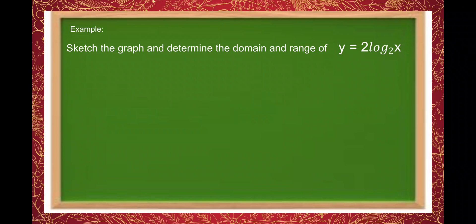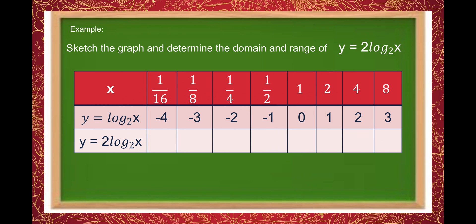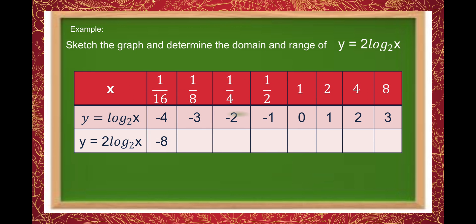For example, sketch the graph and determine the domain and range of y is equal to 2 times log of x to the base of 2. From the table of y is equal to log of x to the base of 2, since we are making a table for y is equal to 2 log of x to the base of 2, we multiply each y-value by 2. So if x is 1 over 16 and the y-value in log base 2 of x is negative 4, then for 2 log base 2 of x, the value becomes negative 8.